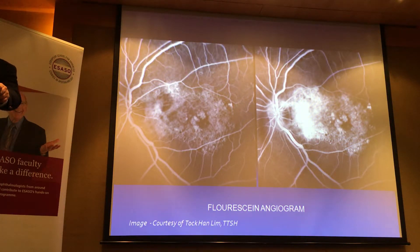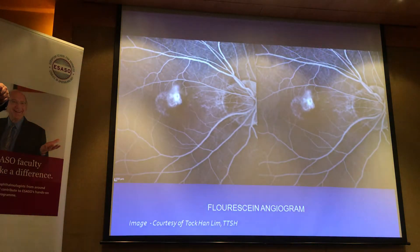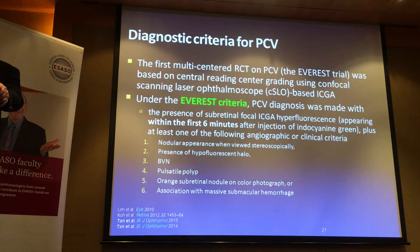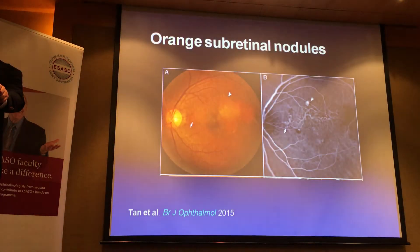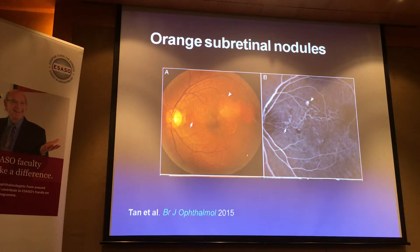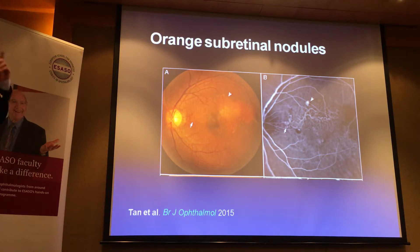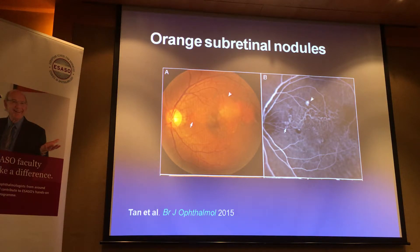Fluorescein angiograms show leakage, which is useful for identifying CNV lesions. But let's talk about PCV. I would reiterate that if you want a definitive diagnosis of PCV, you will require ICG. And this is how multimodal imaging helps you — on the color fundus photo you may already see orange nodules and a large PED, but on ICG you see both the polyps and the branching vascular network clearly, which you don't really see on the color fundus photo.